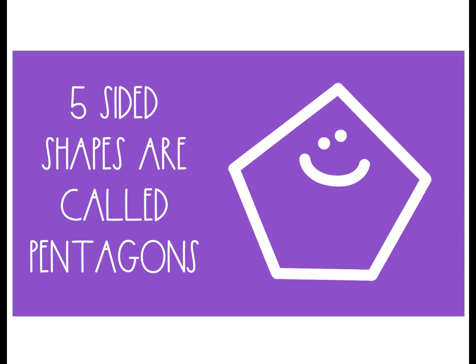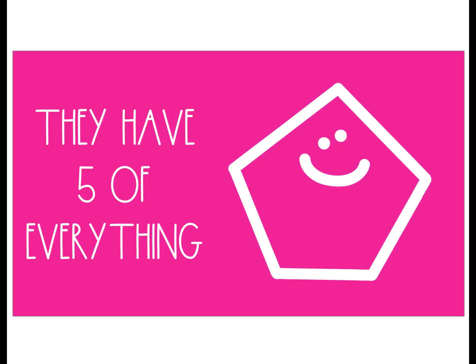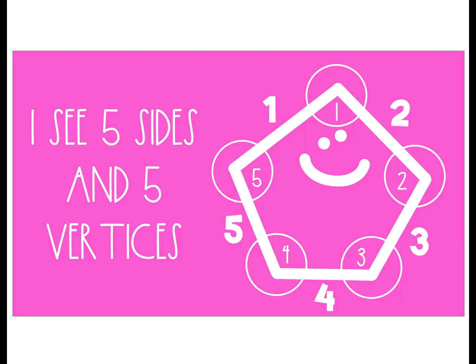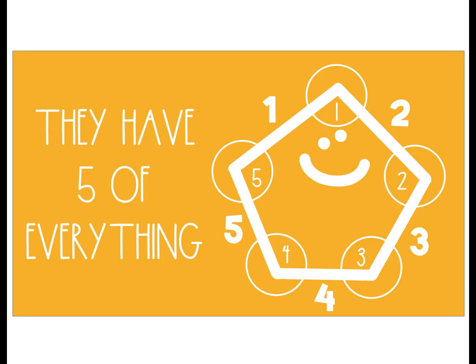Five-sided shapes are called pentagons. They have five of everything. I see five sides and five vertices — they have five of everything.